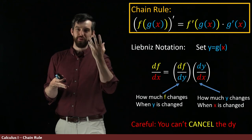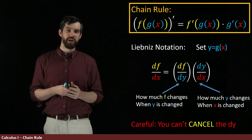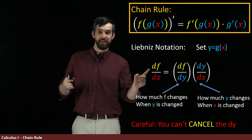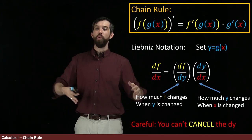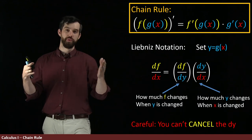Nonetheless, as a sort of a mnemonic or heuristic to how to think about the chain rule, it is the case that df/dx is what would have happened if you were allowed to cancel even though you are not.